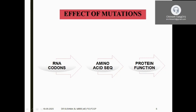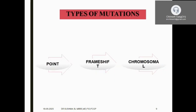Regarding the effects of mutations — at what level do they cause different effects? Mutations can affect the mRNA codon, the amino acid sequence, or directly affect protein function. That means they can affect translation or post-translational modification.